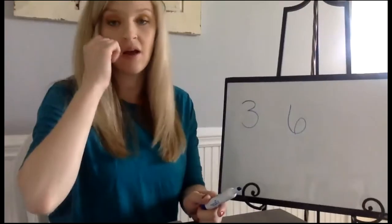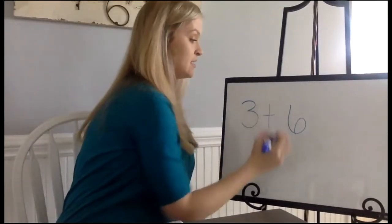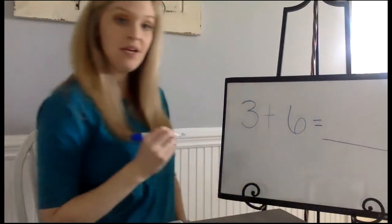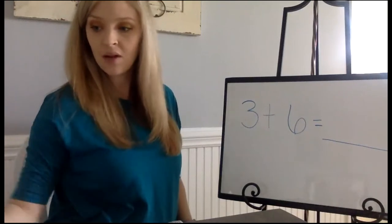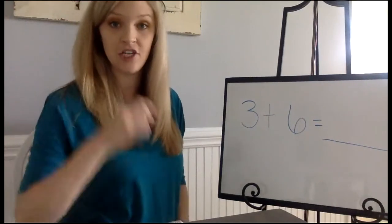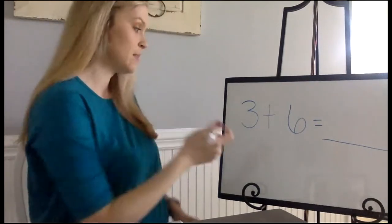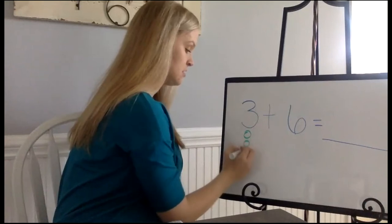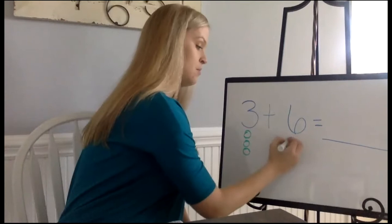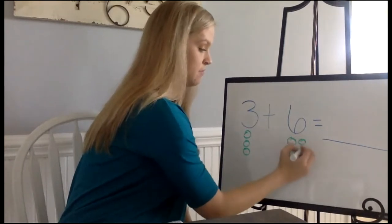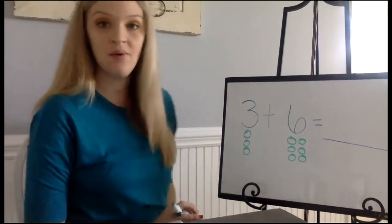So now it is our job to solve how many cookies Mrs. Pilkington has now. I have my equation: 3 + 6 = blank. We need to solve how many cookies Mrs. Pilkington has now. I'm gonna use my picture strategy and draw circles underneath each to solve. So three: one, two, three. And then six: one, two, three, four, five, six.